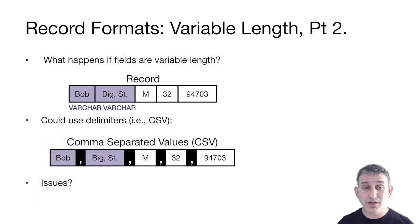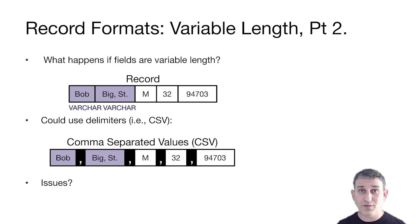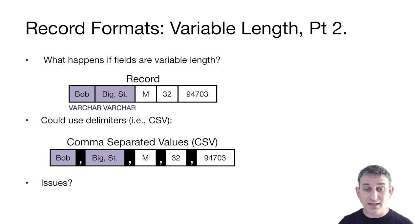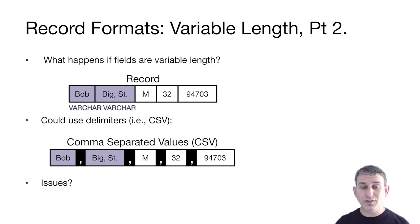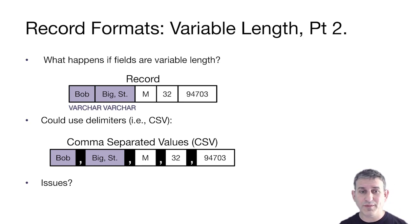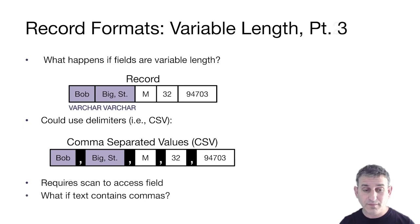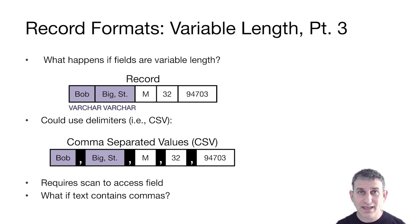Another possibility is to use delimiters — for example, storing fields separated by commas: bob, big street, male, 32, 94703. But there are problems. First, whatever character you use as a delimiter might also appear in your data — for example, 'big, street' has a comma inside the field, making it hard to differentiate the separator from the data. This is a common challenge in CSV files and requires ugly escape characters that waste space. Moreover, to find field number three you have to start at the left and count delimiters, creating a scanning cost in memory.